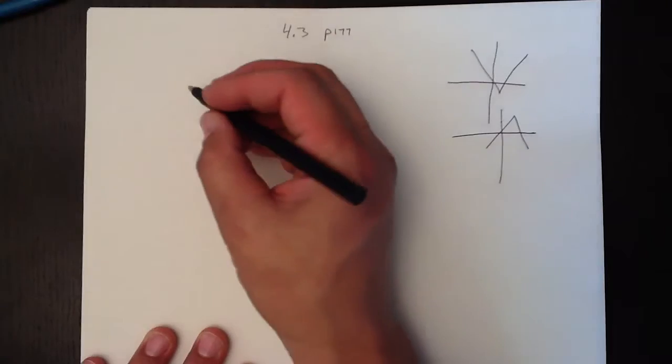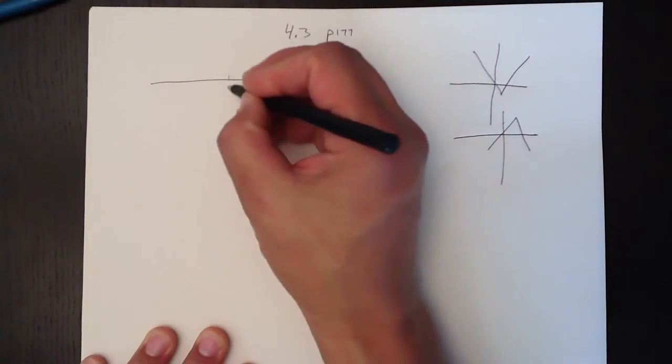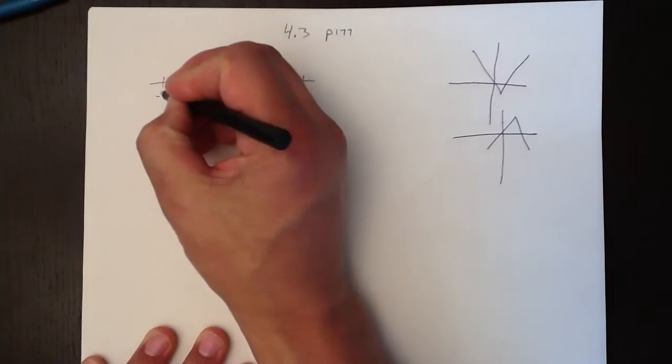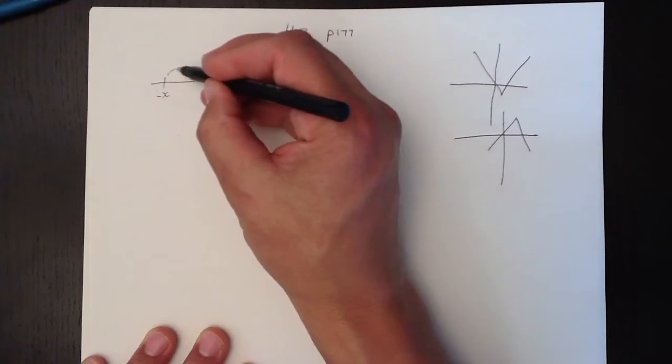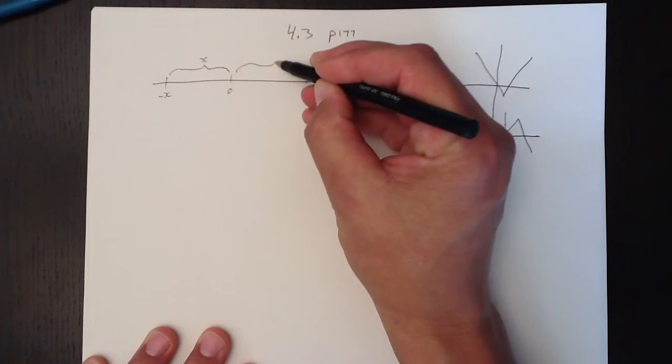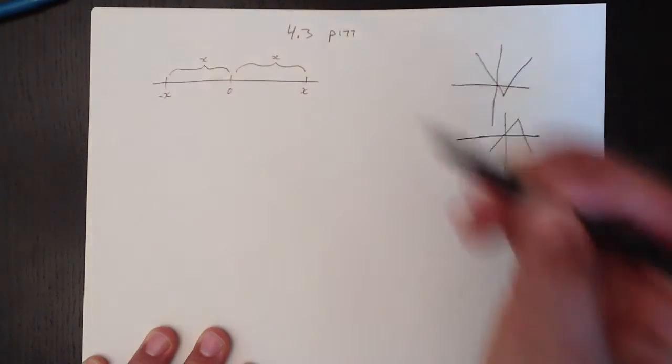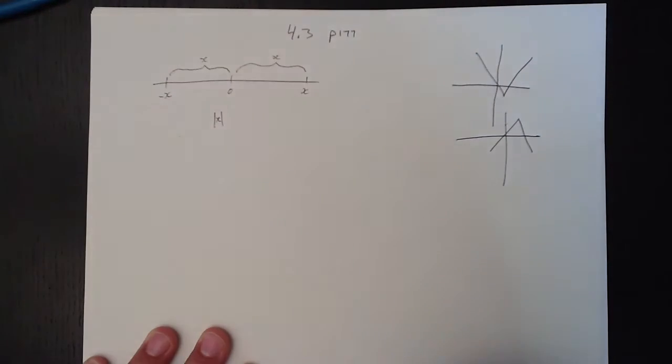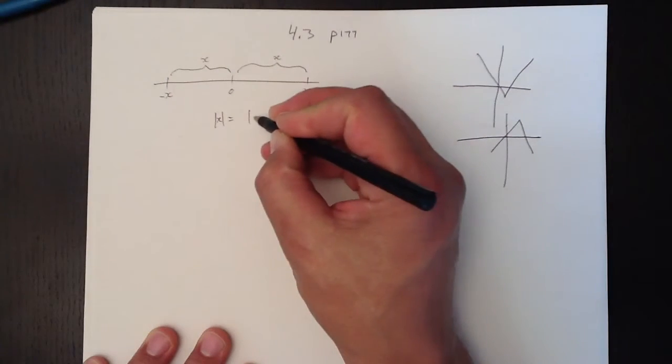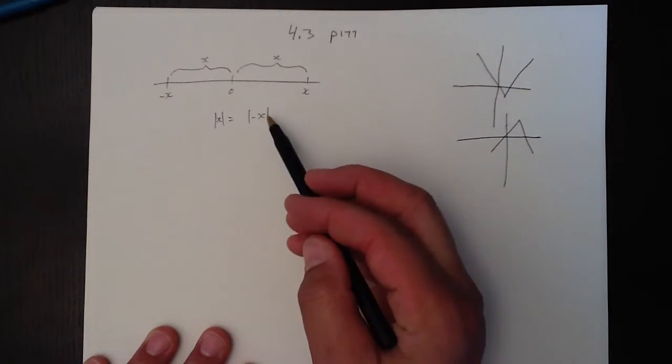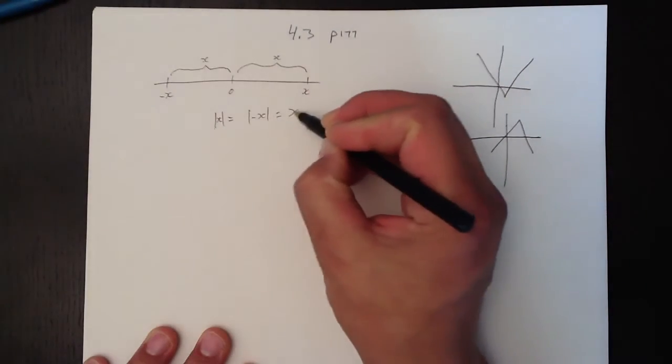Well, an absolute value, as you probably already know, we take the number line 0 and we plot x on there, and we plot minus x on there. The distance to 0 in both cases is x, and absolute value always talks about the distance to x. So the absolute value of x equals the absolute value of negative x. Both the absolute value of x and negative x is equal to x.